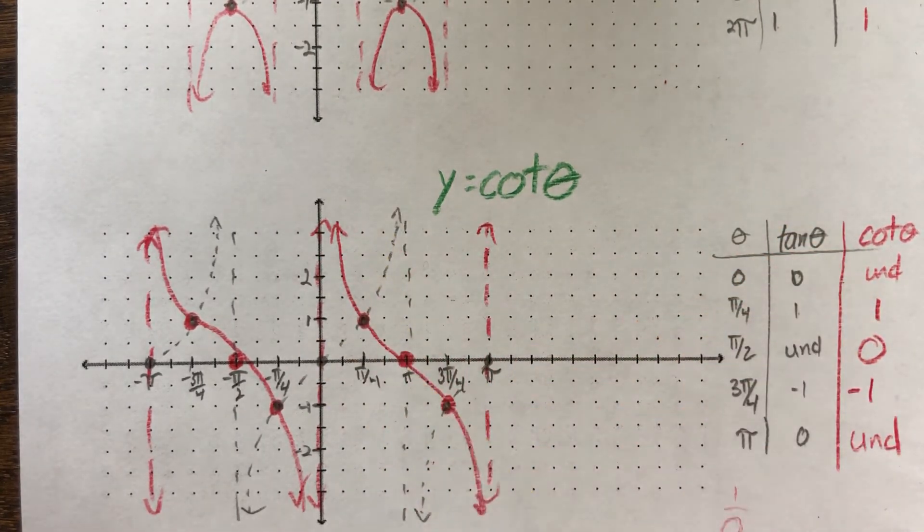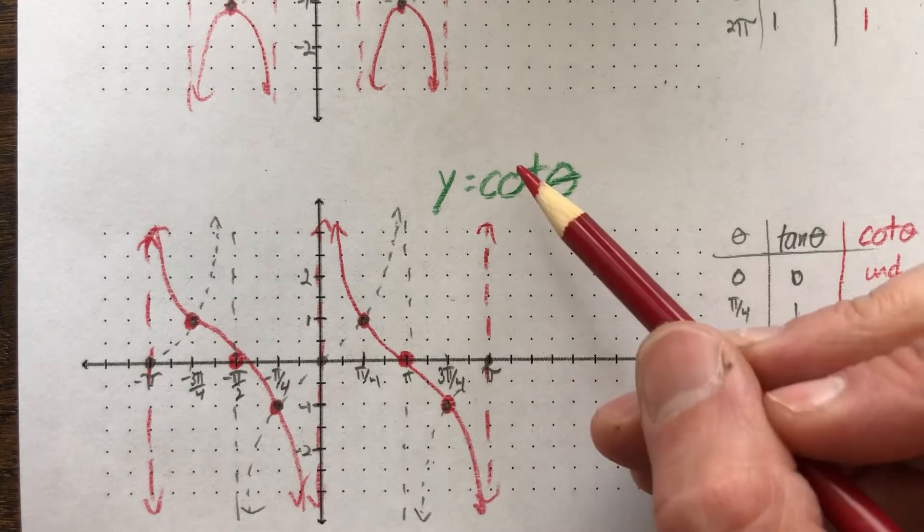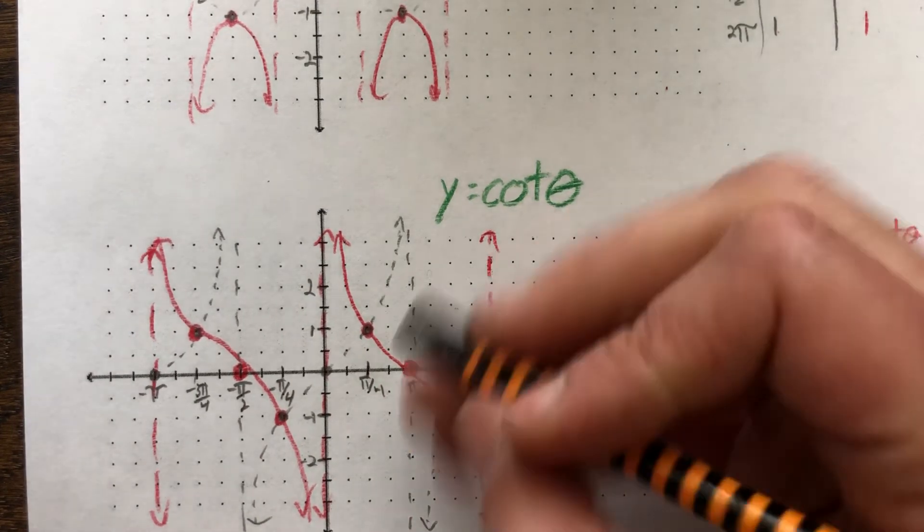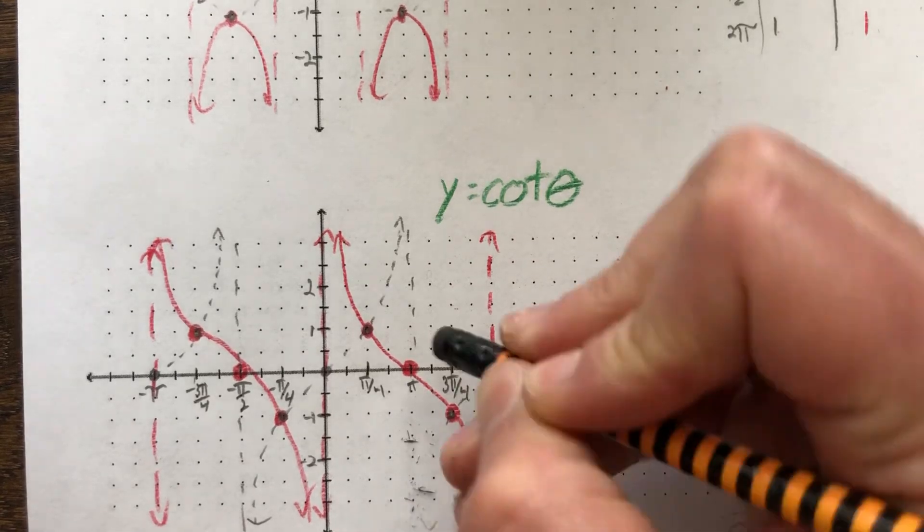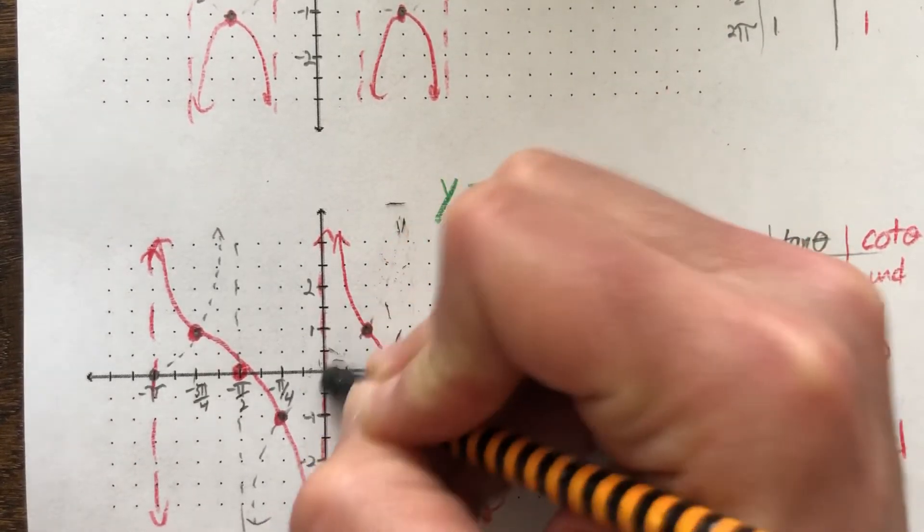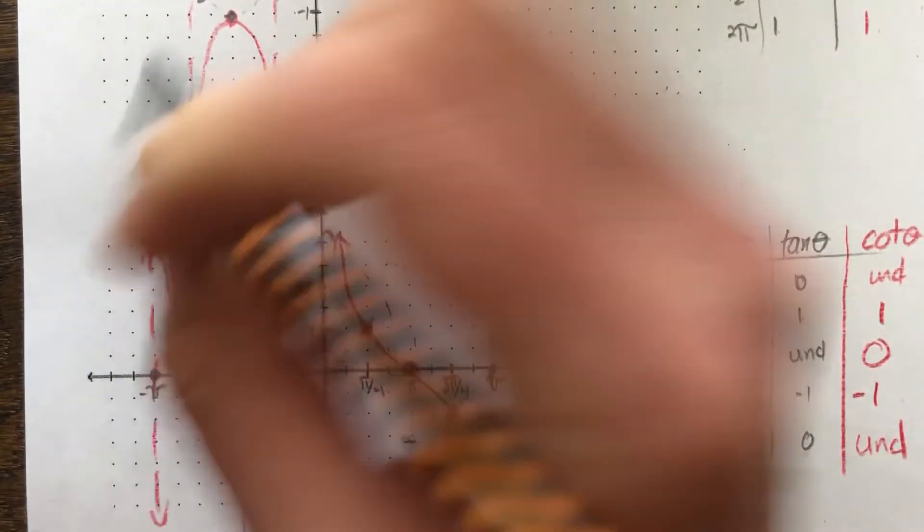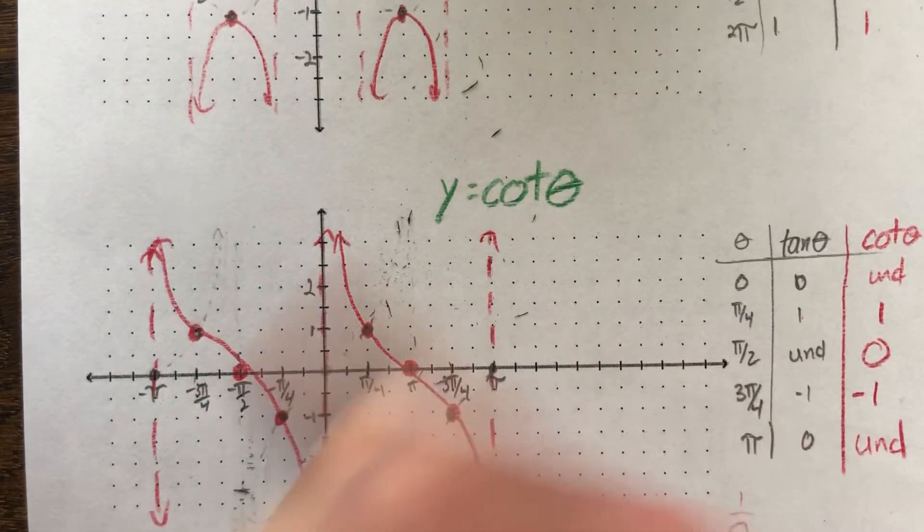It's not exactly flipped because it's shifted over a little bit. But you still get the same idea that it's now going down to the right instead of up to the right. Like a tangent graph. Okay? And again, I'm going to get rid of these because they really shouldn't be there.